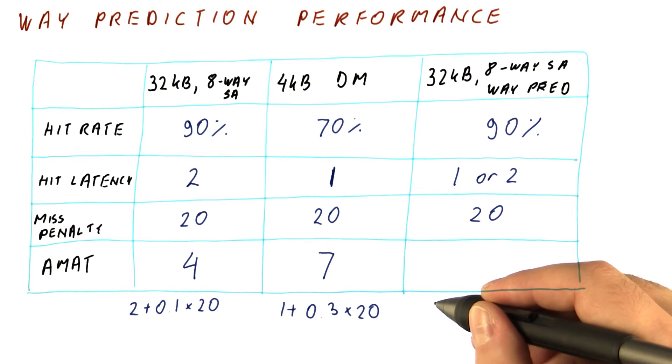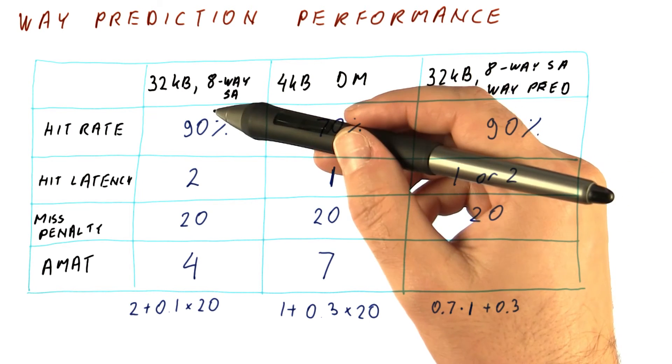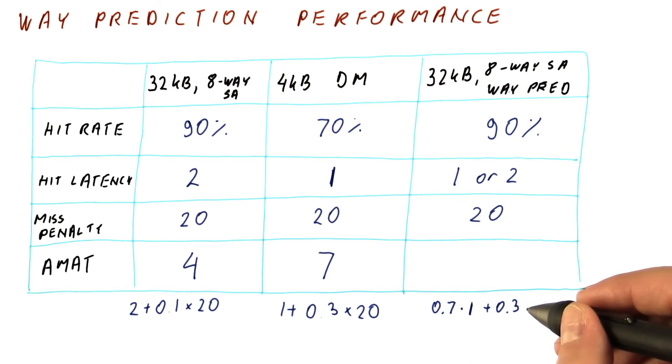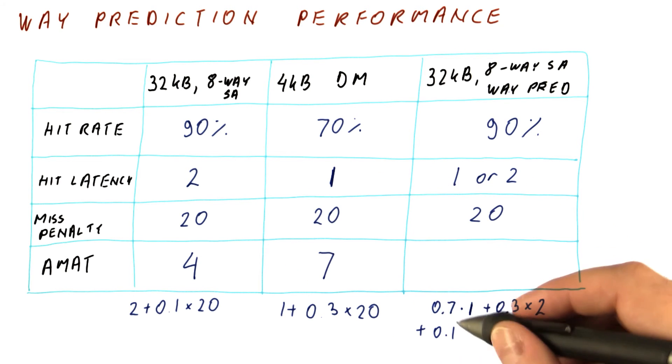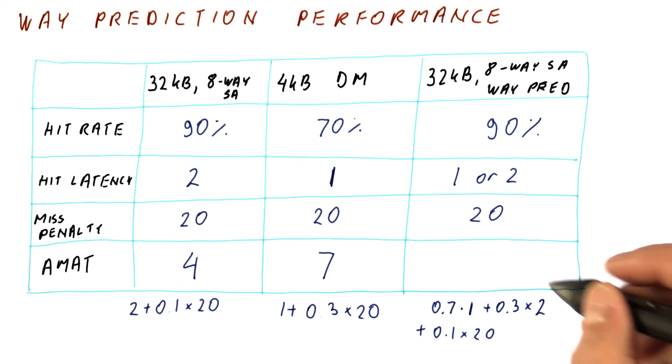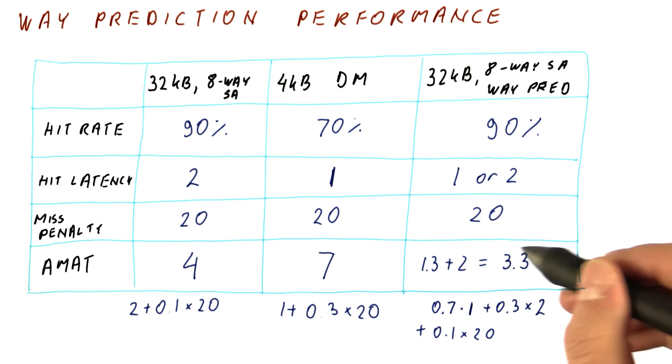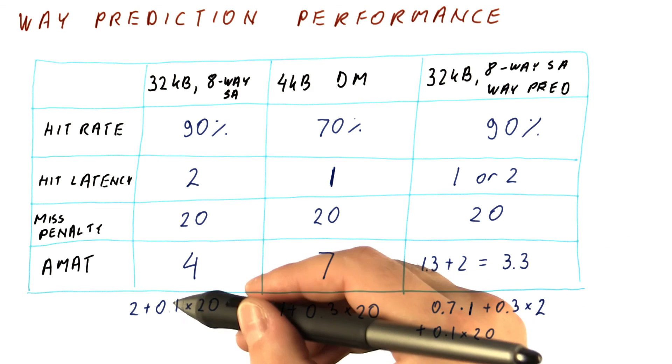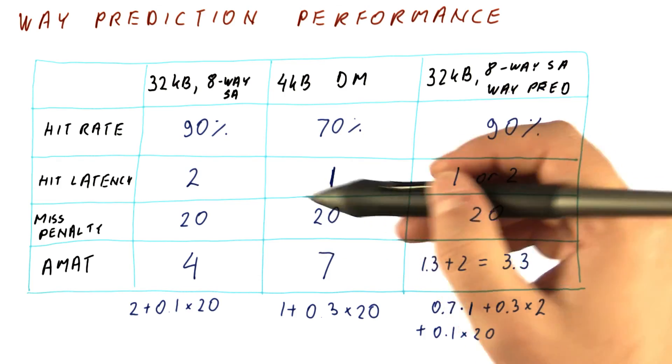Our hit latency now is one or two, and our miss penalty is 20. So how do we compute the AMAT? Well, what we now have is that 70% of the time, we find what we are looking for in one cycle. The other 30% of the time, whether we have our hit or a miss in the eight way cache, we have to check it. So the other 30% of the time, we're checking all of the ways for which we pay a two cycle latency, and then 10% of the time, we don't find what we are looking for in all of the ways, so we have to pay the miss penalty. So now we have what looks like our hit time, 70% of the time it's one, 30% of the time we have to use a two. So we end up having a 1.3 cycle on average hit time, and the miss penalty of the eight way set associative cache, which is still going to be two. And this is how we improve things. We now get an AMAT of 3.3, because what we effectively got was the misses of an eight way set associative cache, but the hit time that is much closer to a direct map cache than it is to an eight way set associative cache.